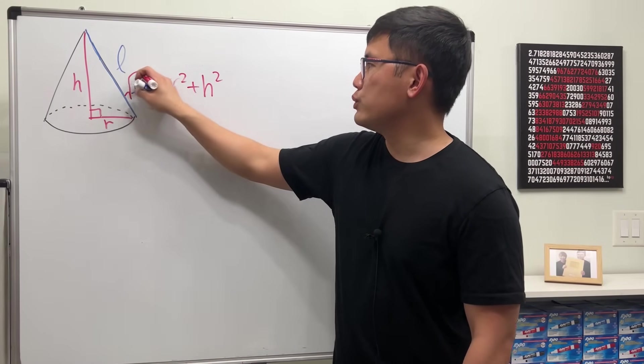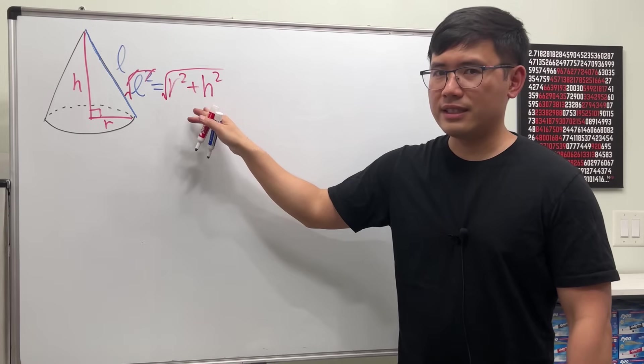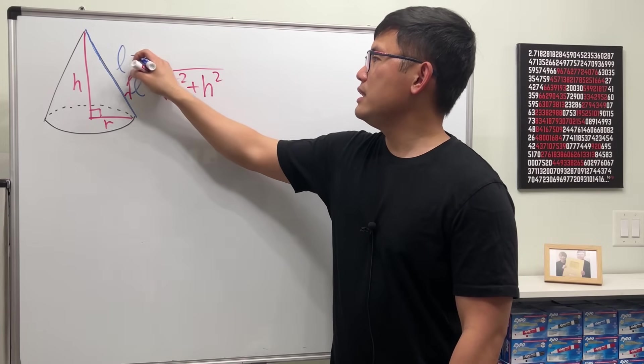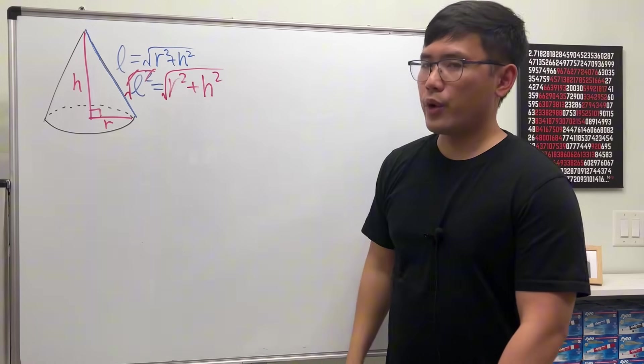So the hypotenuse squared is equal to this squared plus that squared. And then just take the square roots on both sides. They cancel, but this right here cannot simplify. L is equal to square root of R squared plus H squared.